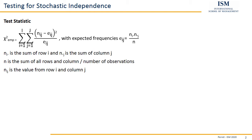Expected frequencies are the frequencies which would occur in this situation if we wouldn't have any kind of relationship — so if all the observations were totally random, still adhering to the marginal frequencies, the column or row sums. In general, expected frequency means this is how it would look if there's absolutely no relation whatsoever between the two variables.